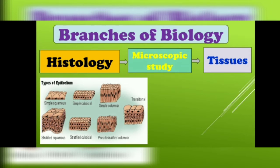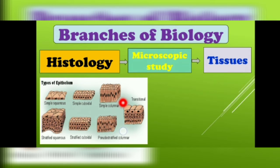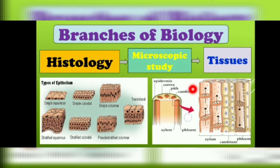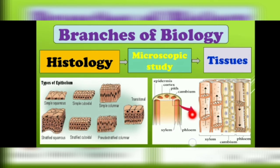For example, animal bodies are composed of a wide variety of tissues, such as epithelial tissue — as you can see in this diagram. Some epithelial tissue is present on the epidermal layer of your skin. Just like animal bodies, plant bodies are also composed of various types of tissues — for example, xylem tissue and phloem tissue. Xylem tissue is responsible for the transport of water, while phloem tissue is responsible for the transport of food.